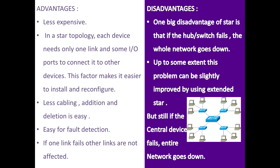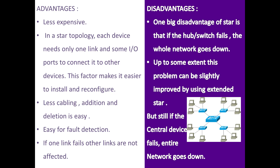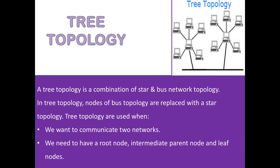The disadvantage of Star Topology is that if the central hub or switch fails, the whole network goes down. This can be slightly improved by using an extended star, where end devices are not directly connected with the central device — they are first connected with a switch, and that switch is connected with the central switch. But still, if the central device fails, the whole network goes down.